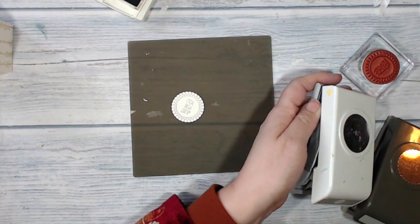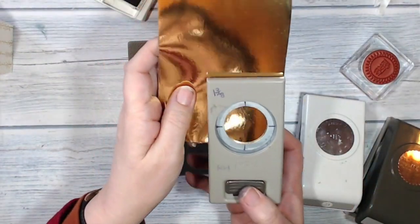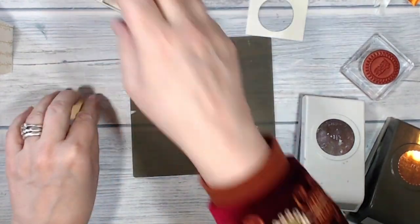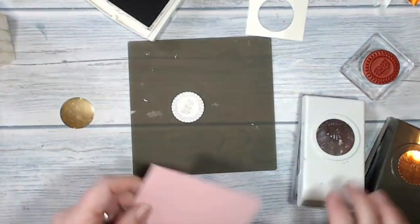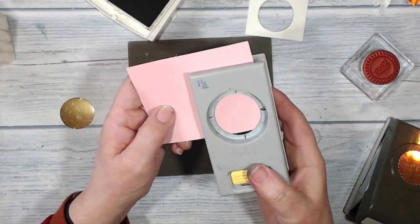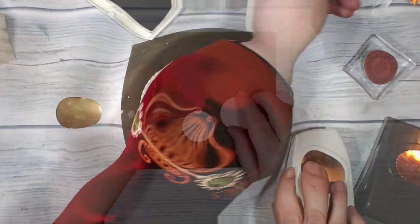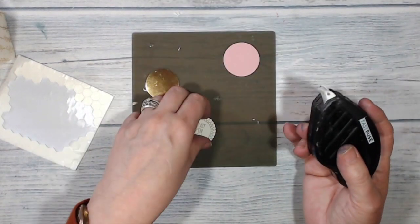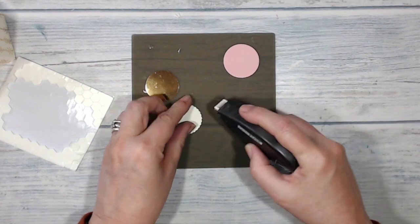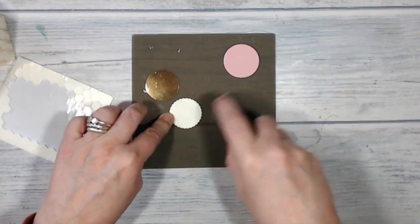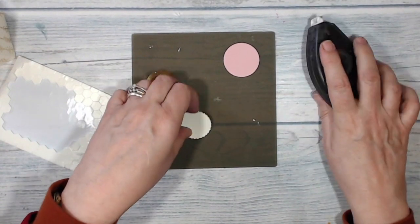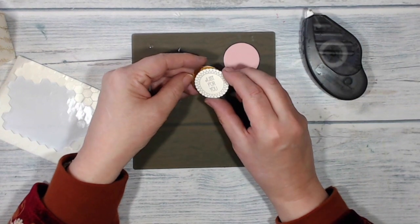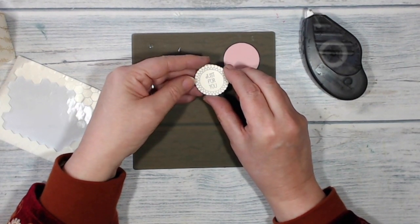With my one and three-eighths inch plain circle, I'll punch out a piece of gold foil. And with the one and a half inch circle punch, I've got a piece of Blushing Bride. Now I'm going to layer these pieces up. I have some Fast Fuse here—Snail will do if you're out of Fast Fuse because it's been discontinued.